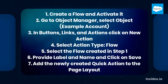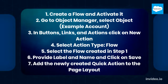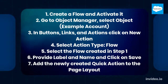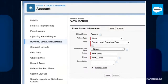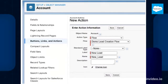4. Select Action Type: Flow. 5. Select the Flow created in Step 1. 6. Provide Label and Name and click on Save. 7. Add the newly created quick action to the page layout. See this picture.